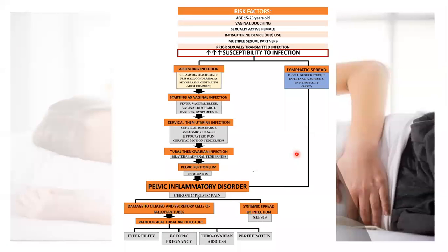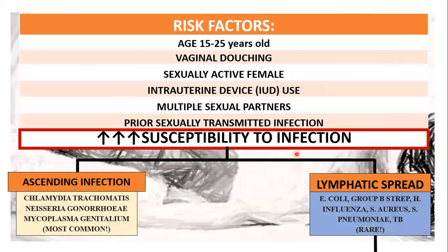Here is a brief overview of our CPC, and we'll be discussing this by section. The important risk factors to consider include: the patient belonging to the reproductive age group, those who do vaginal douching, sexually active females, those who use an intrauterine device, and those with multiple sexual partners and prior sexually transmitted infections, who are the most susceptible.